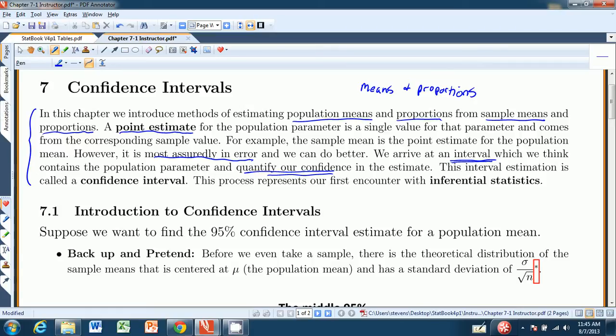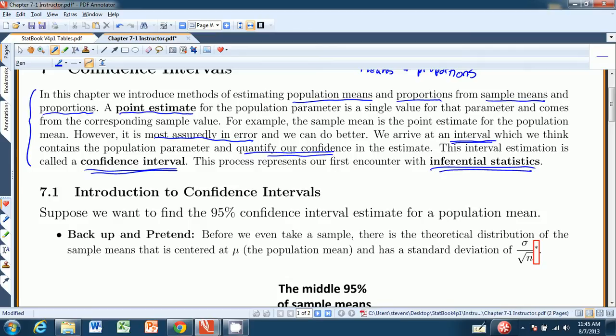And this whole process is called creating a confidence interval. And it represents our first encounter with inferential statistics, meaning we take sample data and we try to make inferences about population information. Okay, so let's get started.